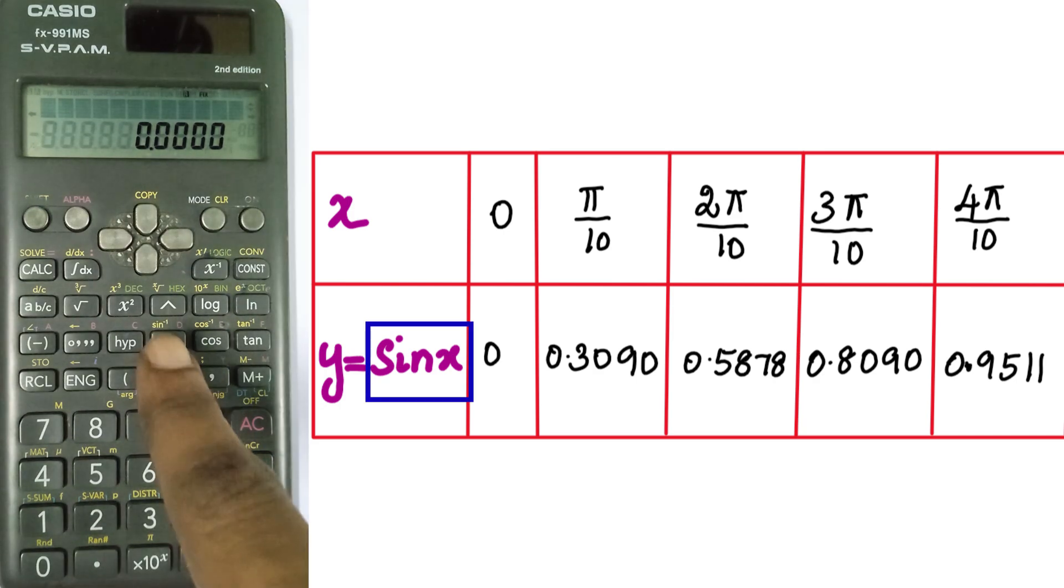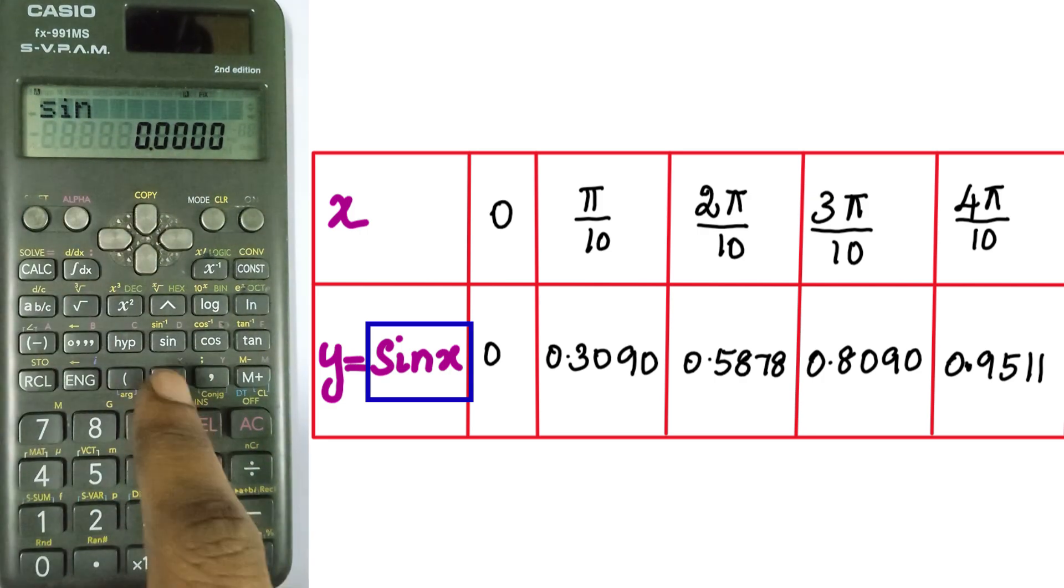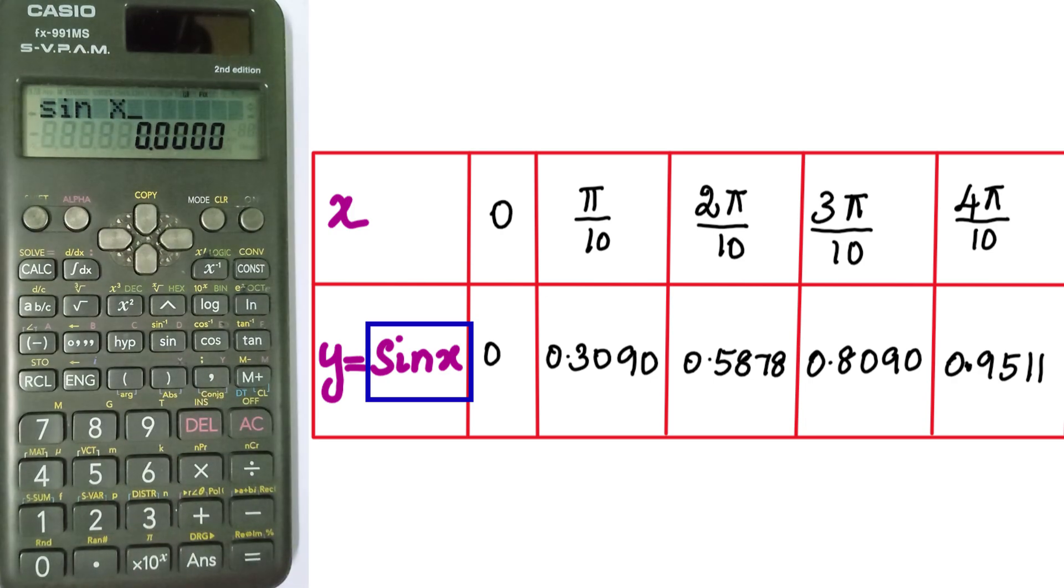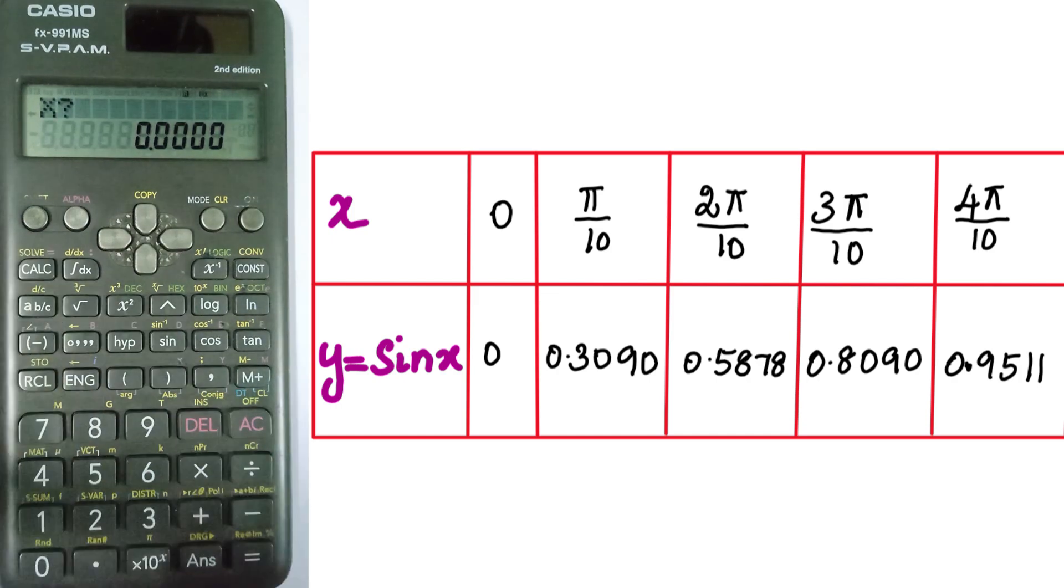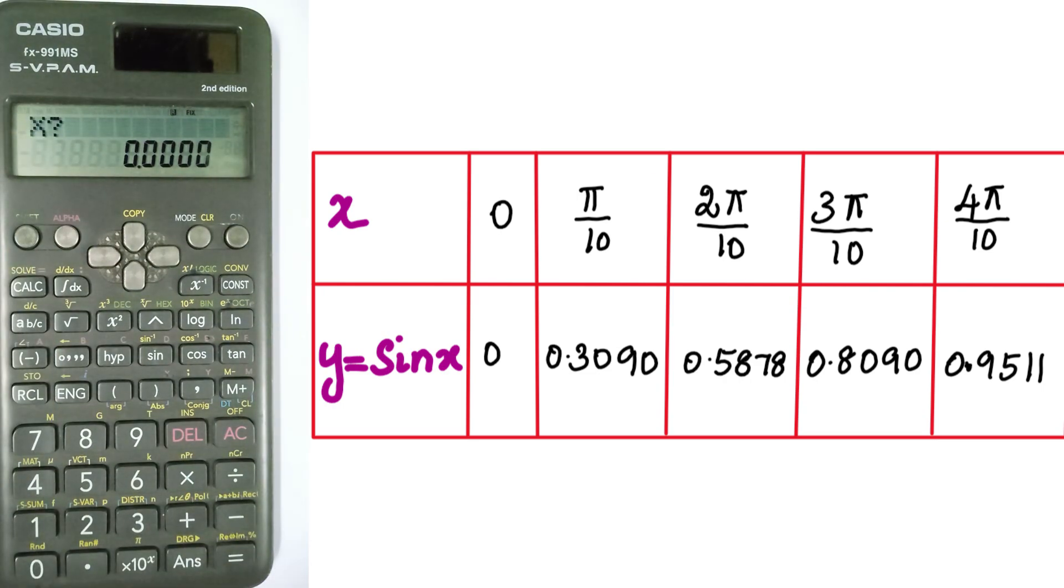Now we calculate the y values. Press clear, then enter x value equals 0. The corresponding function value y equals 0. Next, enter x value π by 10.